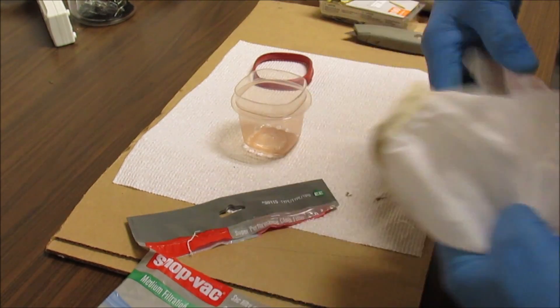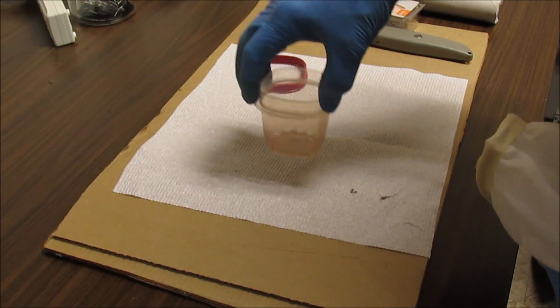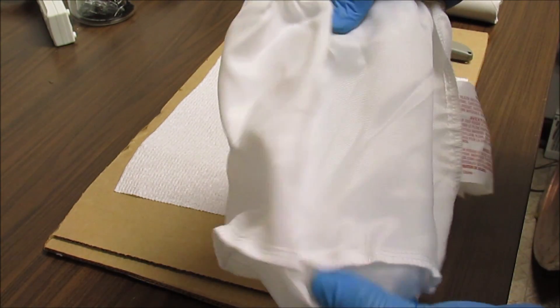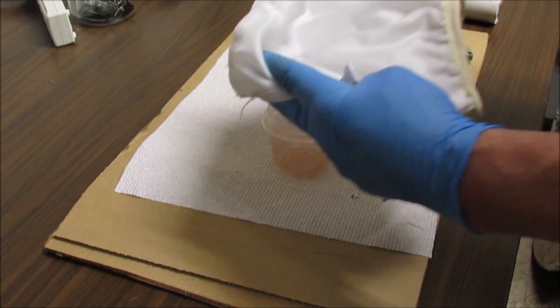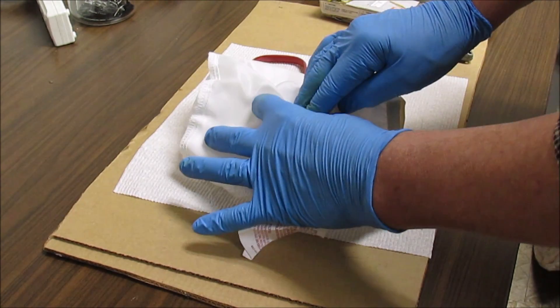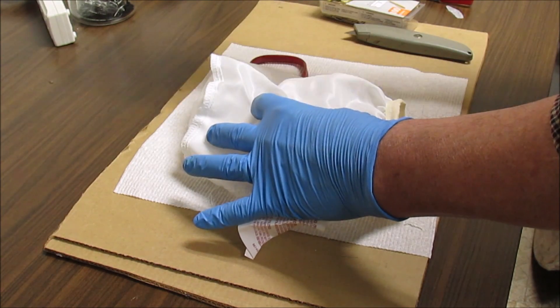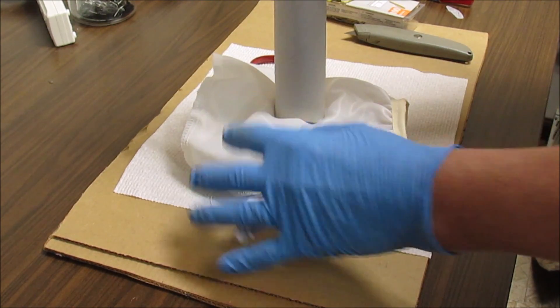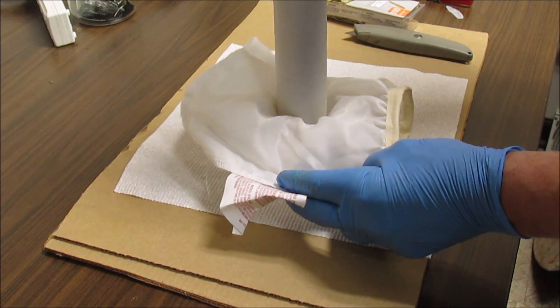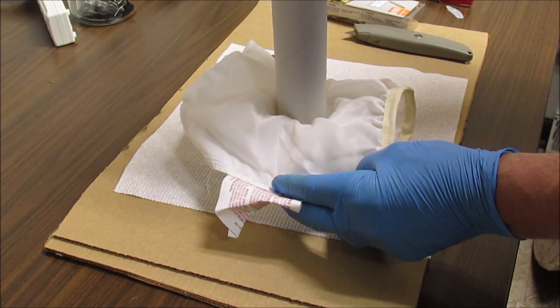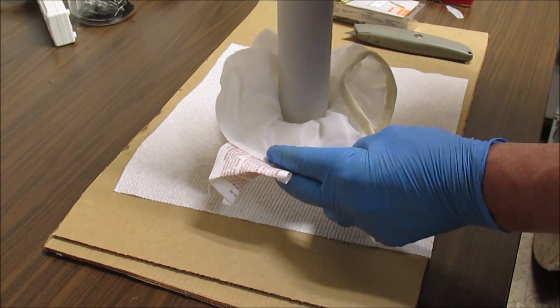What I like to do is double up the filter bag so you got two layers of filter there. This is like a Dacron material, works well for filtering the silver. I use this old paper towel tube here to push it all the way down in the bottom.